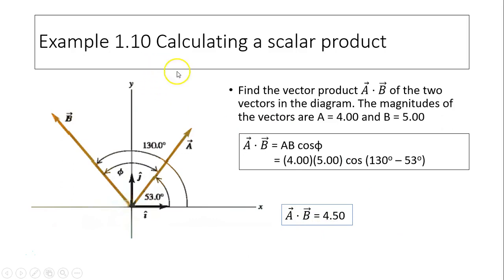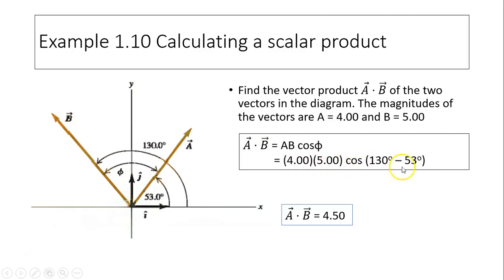Calculating a scalar product. Find A dot B for two vectors in a diagram where the magnitude of A equals 4 and B equals 5. By definition, A dot B equals A times B times cosine phi. The angle between them is 130 minus 53 degrees. Plugging into the calculator gives A dot B equals 4.50.